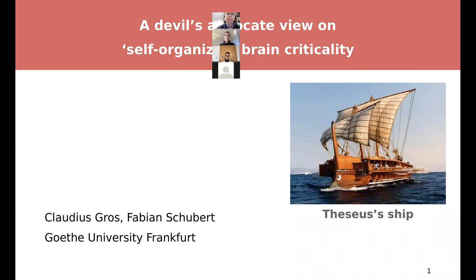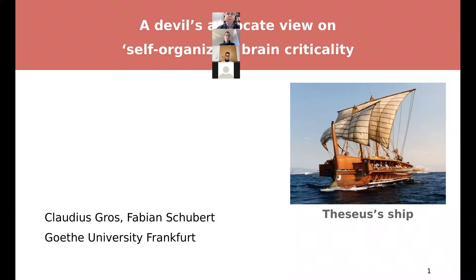Some of the work I'm going to talk about is work together with Fabian, and he has gotten some very nice results. Here you see a very famous ship from antiquity, from the Greeks. I will come to the significance of the ship in the framework I will develop. What I'm not going to talk about is an overview of the experimental and general theoretical status of brain criticality.